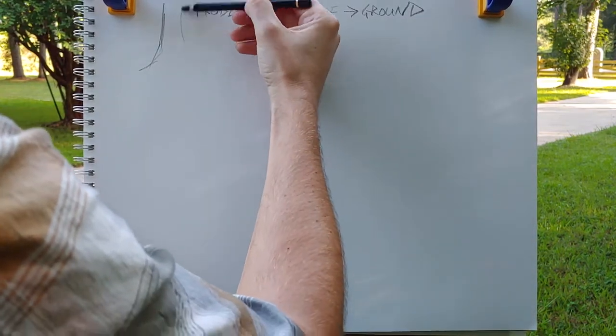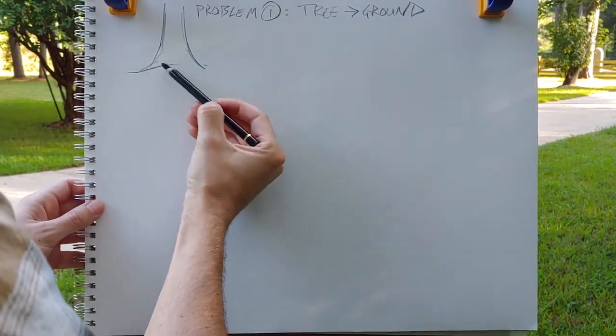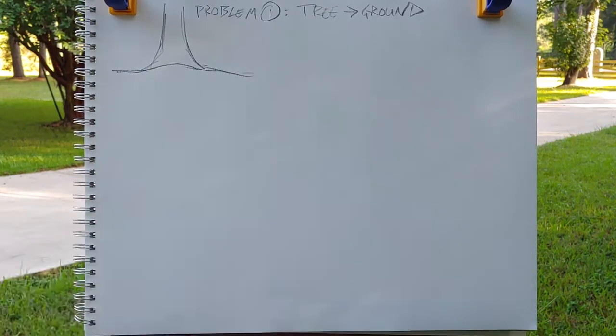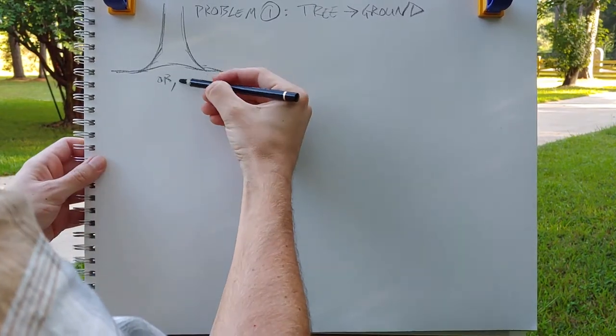One of the most common problems in landscape drawing is actually really easy to fix and it's the way that the tree connects to the ground.